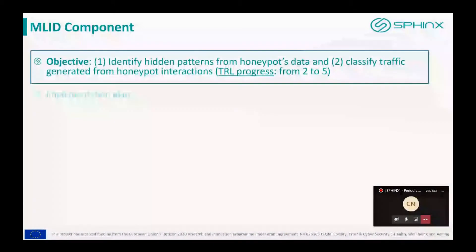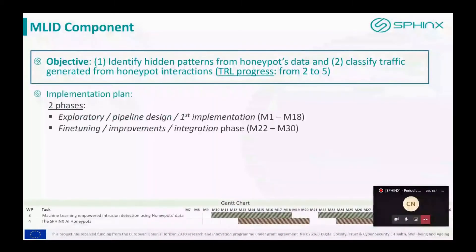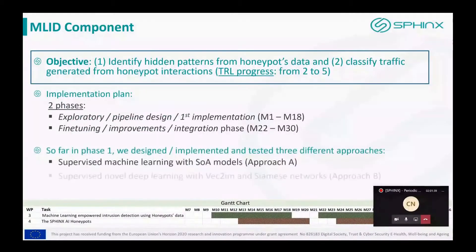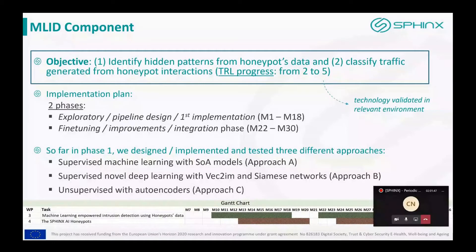First, a few words about the scope. The main objectives are to identify hidden patterns and classify traffic generated from Honeypot interactions. The implementation was divided into two phases: the first is exploratory, with an objective to try out different methodologies and designs in order to select the optimum; the second phase starts at Month 22, will last until Month 30, and will focus on fine-tuning, improvements, and integration with the rest of the components.